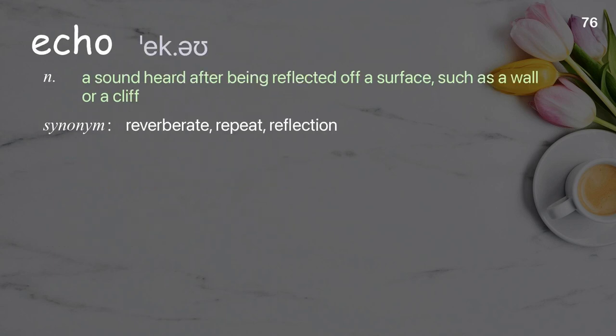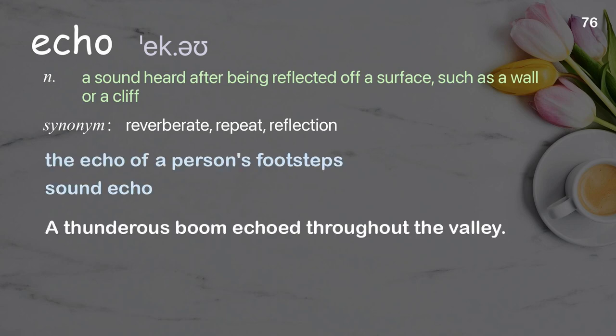Echo: a sound heard after being reflected off a surface, such as a wall or a cliff. Examples: the echo of a person's footsteps, sound echo. A thunderous boom echoed throughout the valley.